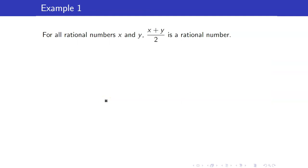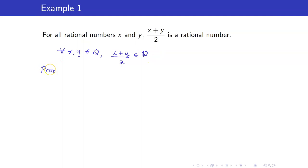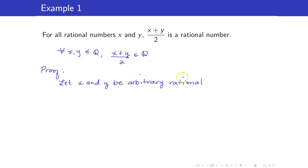For example, for all rational numbers x and y, (x + y)/2 is a rational number. If we write this using symbols, this becomes: for all x, y in Q, (x + y)/2 must be rational. So how do we go about our proof? We start with: let x and y be arbitrary rational numbers. Our goal is to show that (x + y)/2 is in Q.